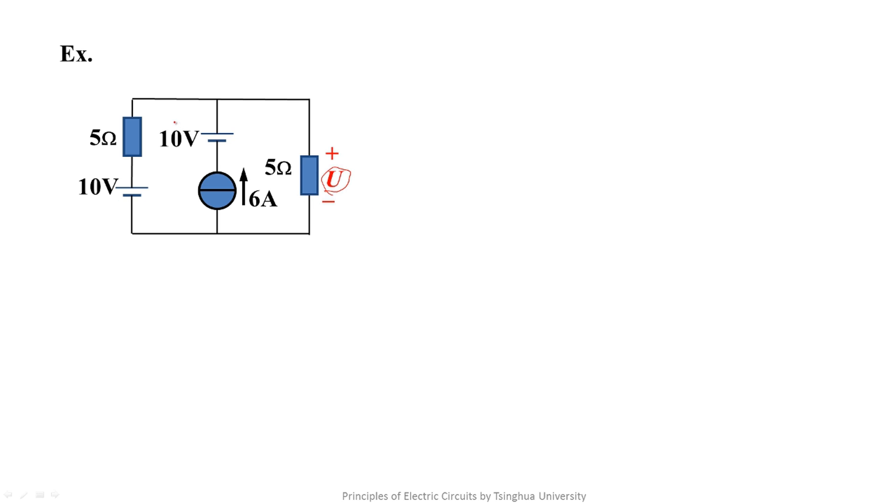We need to find the voltage U across a 5 Ohm resistor. Firstly, we observe that the voltage source and current source are serially connected here. What can it be equivalent from outside? Yes, only the current source. This is a serial connection of voltage source and resistor.